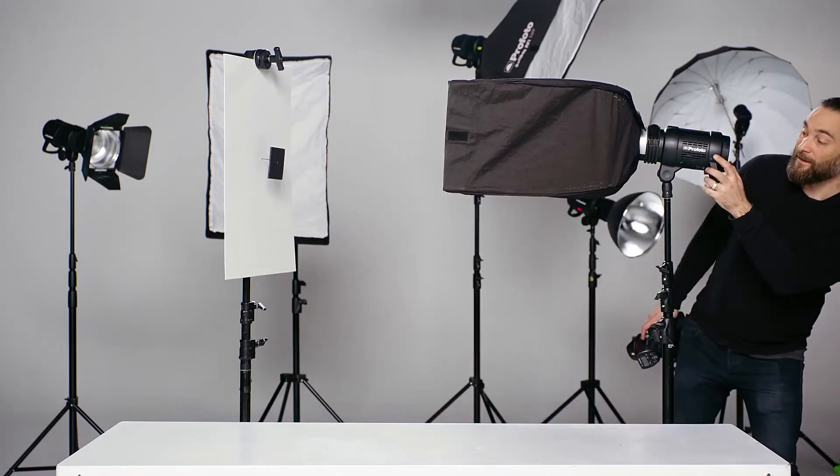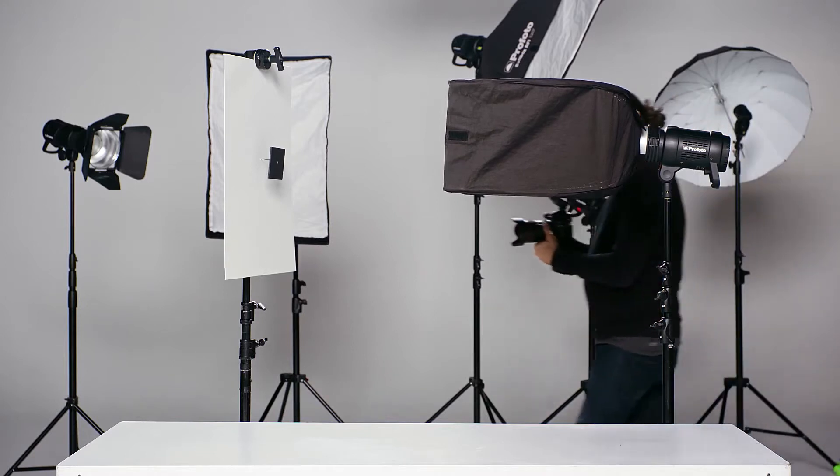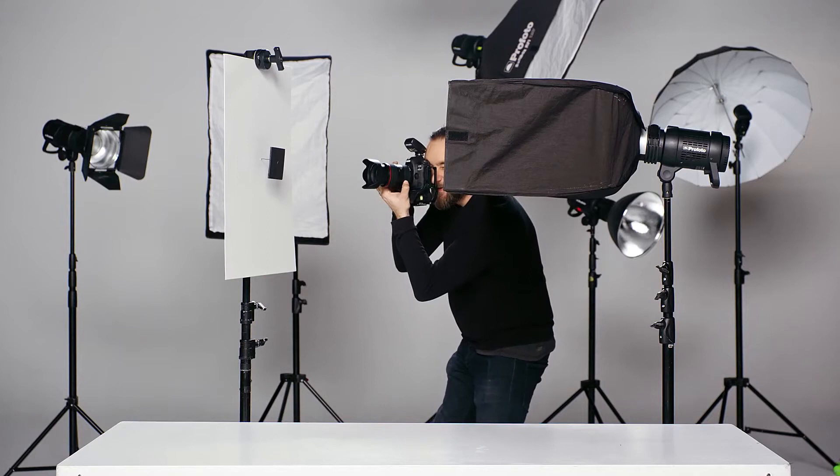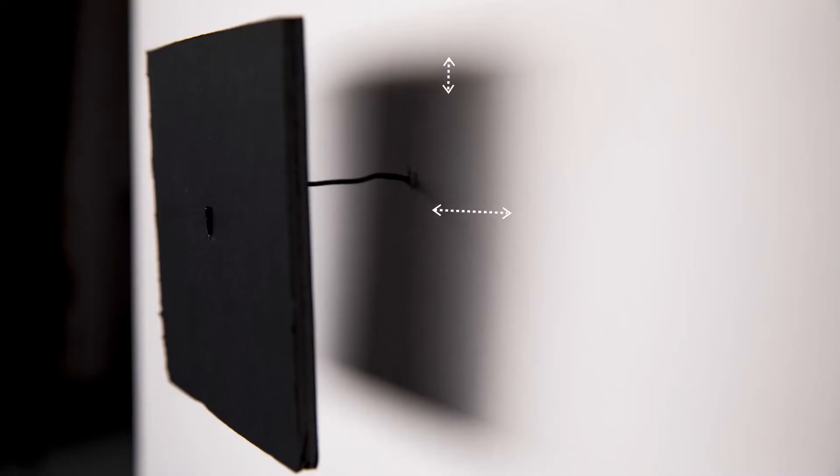To prove my point, I will not use any modeling light on this modifier. The shadow is much softer horizontally than vertically, exactly according to the shape of the modifier. Let's make the modifier even smaller vertically.